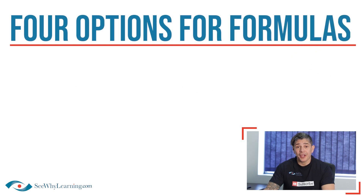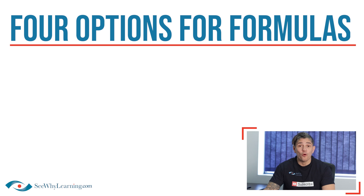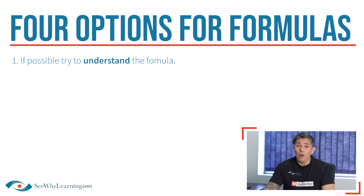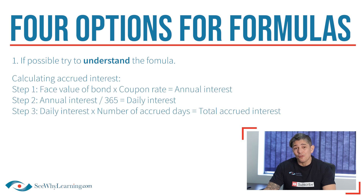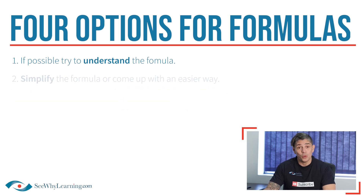When preparing for an exam, a student has four basic options when it comes to dealing with formulas. One: if possible, try to understand the formula — that way, there's nothing to memorize. We take this approach with a formula like accrued interest, which isn't too difficult and is fairly logical. Two: simplify the formula or come up with an easier way.